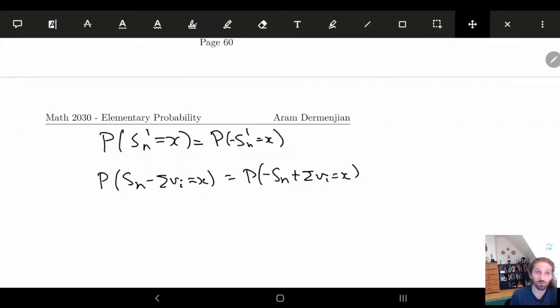So this we just grabbed from before. And then now let's kind of push the vi to the other side. So here we'll do vi to the other side. So we have sn is equal to x plus the sum of the vi is equal to p, which is minus sn of x minus the sum of the vi. And then I want to get rid of this minus sign. Right?